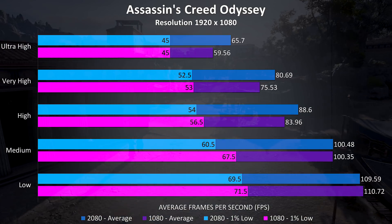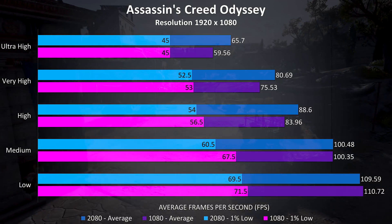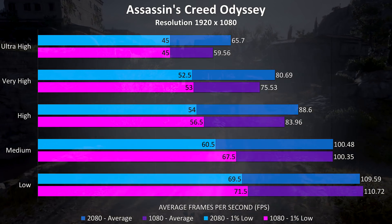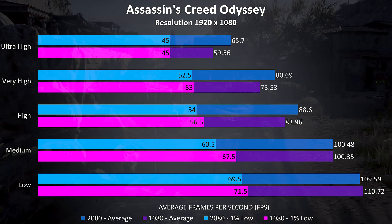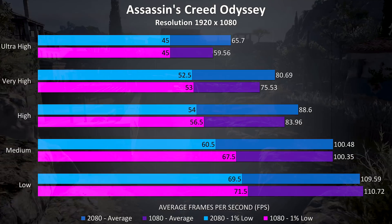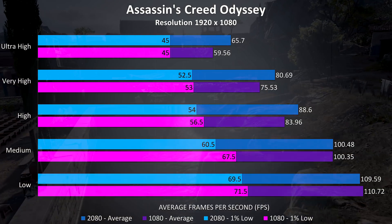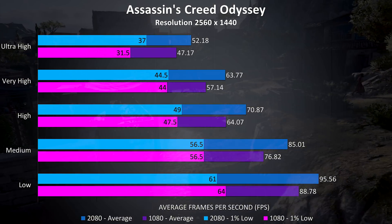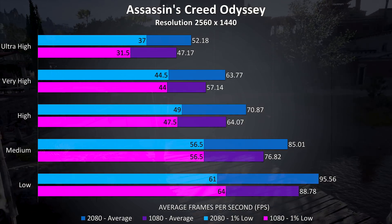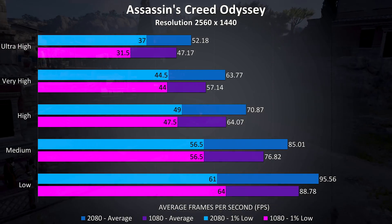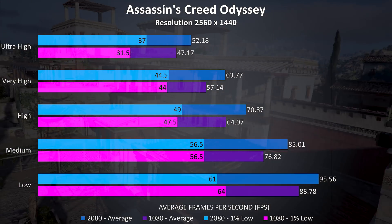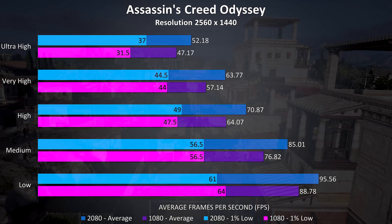Assassin's Creed Odyssey was tested with the built-in benchmark, and at 1080p there doesn't appear to be too much difference overall. At ultra settings the 2080 is getting 10% faster average frame rates compared to the 1080, although the 1% lows were the same and actually slightly lower at lower settings. At 1440p the 2080 is still 10% ahead of the 1080 at ultra settings, but also further ahead at other setting levels. I'll also note that this was the lowest improvement I saw out of all 10 games tested at this resolution.